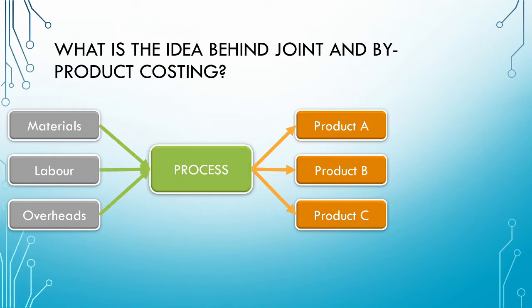It is important to note that the products are produced simultaneously. Some examples of such processes are meat processing, where you can get various different cuts of meat from a single carcass. Also, the production of petrol can result in various different petroleum joint products such as kerosene and paraffin. Finally, the processing of gold can also result in the production of other metals such as uranium.